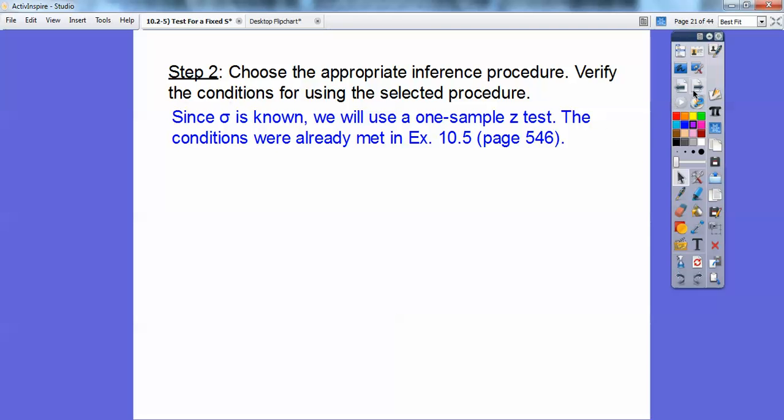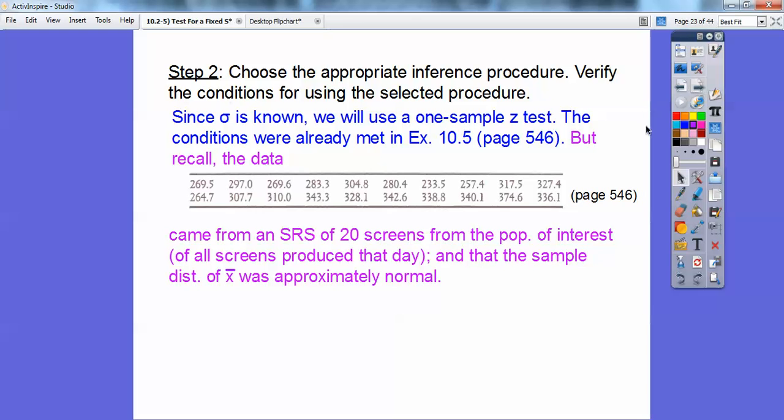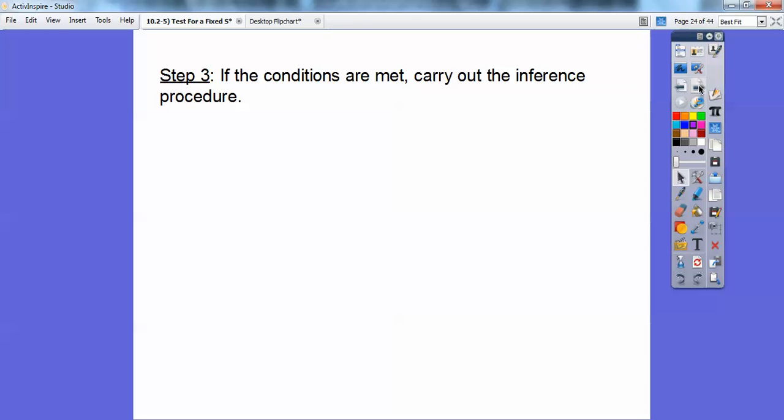And the conditions were already met, but I'm going to recall, you guys, the conditions right here. Okay, here's that sample that we picked from, 20 numbers right there. And then, so we had to make sure that this SRS came from a sample of the population, so it did. So the SRS of 20 screens came from the population of interest, okay? And the sample distribution was approximately normal. So we showed a stem and leaf plot that showed a pretty good bell-shaped curve, so it was approximately normal on that.